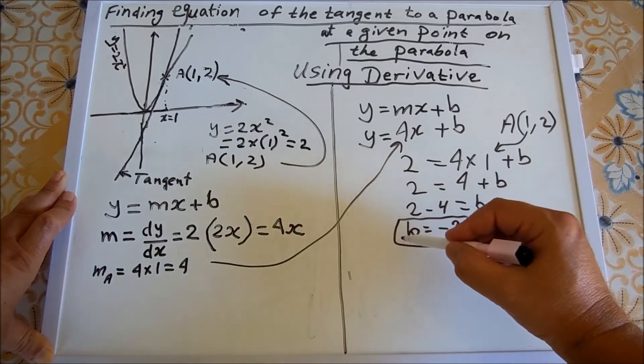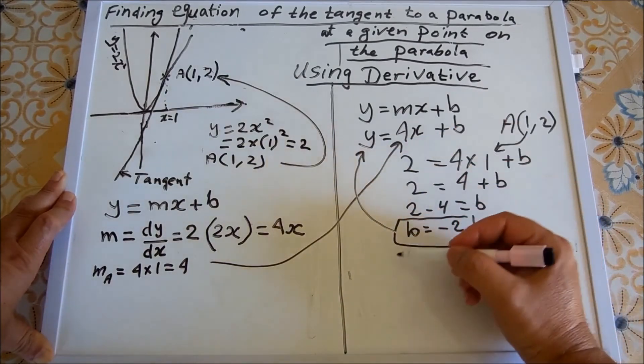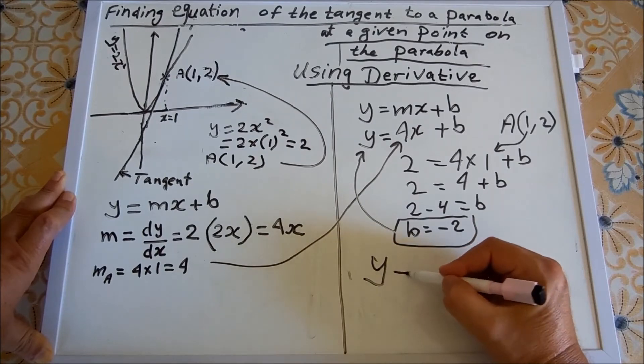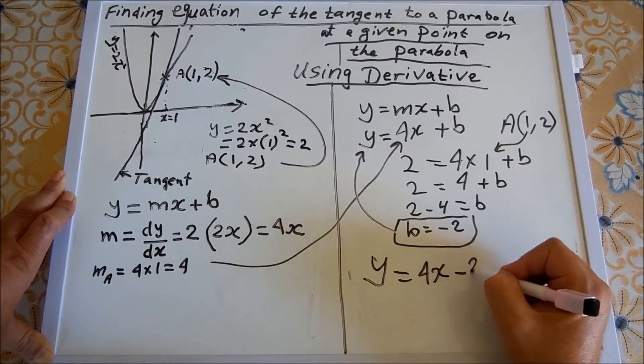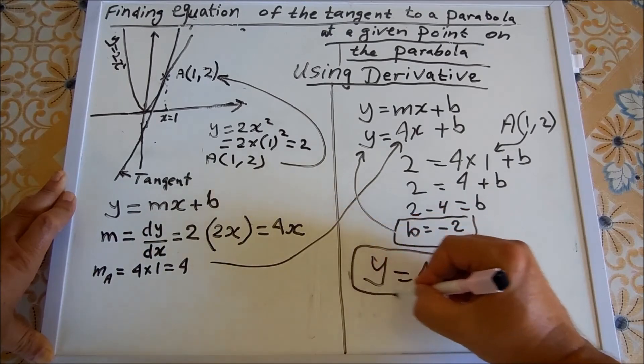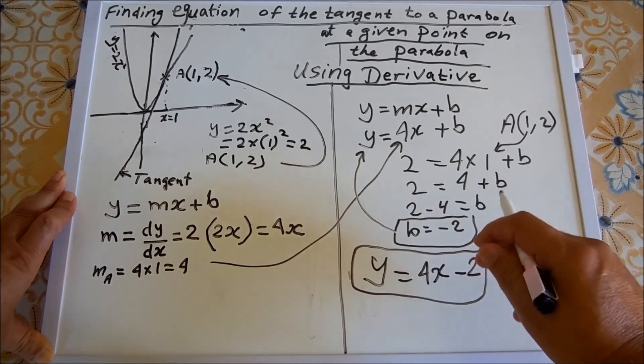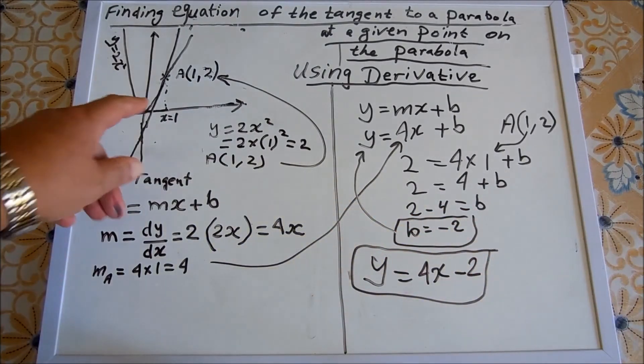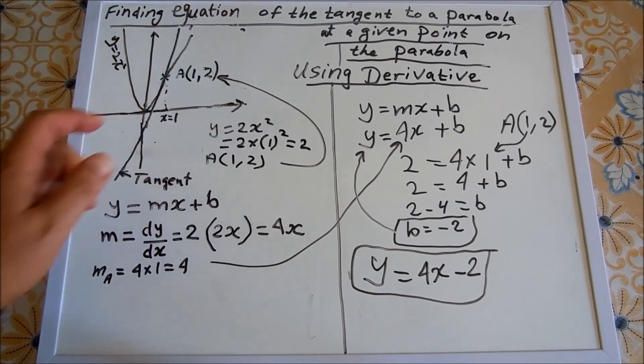We sub it back into this equation, and the equation of the tangent will be y equals 4x minus 2. And there you have it. This is the equation of the tangent to the parabola at A(1, 2). Thank you for watching and see you next time.